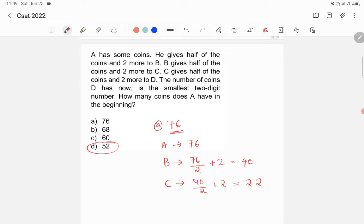That is 22. Then D has 22 by 2 plus 2, which is 13. So 13 is not the smallest two-digit number, so option A is wrong. Similarly, you can put other options, 68 and 60, and then finally if you put option D, 52.